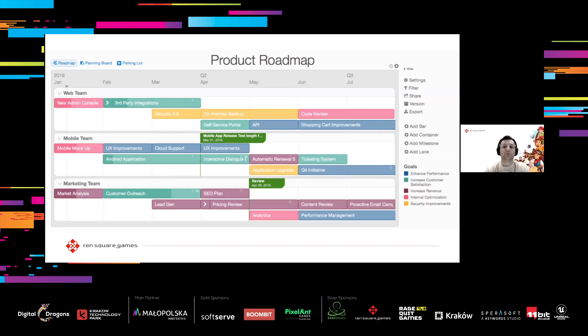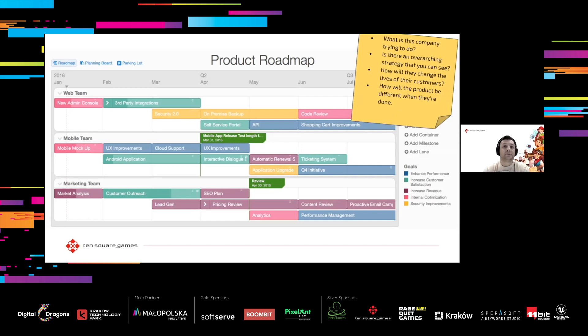Take a minute to review the slide and try to find an answer to these questions: What is this company trying to do? Is there an overarching strategy that you can see here? How will they change the lives of their customers? And how will the product be different when they're done? Pause the video and review the plan. I think we can all agree that they're doing something and have a pretty detailed plan for the next three quarters. There are three teams which probably have some kind of dependencies and common goals, but it's really hard to figure out from this picture.